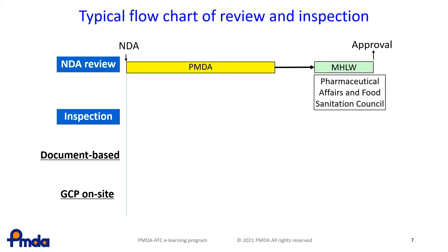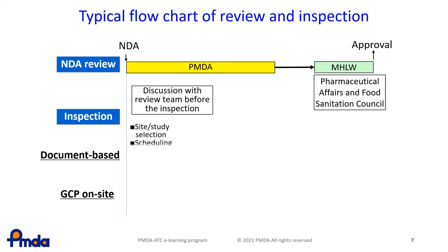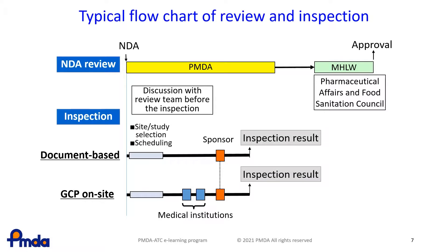This is the timeline of the inspection and review process. Once PMDA receives an NDA application, the inspection division looks through the document and decides on the studies and the medical institutions to be inspected. Then, GCP on-site inspections of the medical institutions are conducted, followed by a document-based inspection and a GCP on-site inspection of the sponsor. When all of the inspections are completed, the results of the inspections are summarised to draw a conclusion regarding compliance after consultation with MHLW. Finally, the applicant, sponsor and the medical institutions are notified of the results of the inspections.